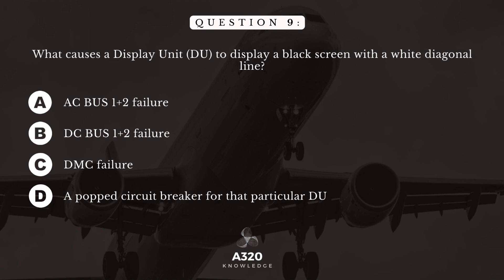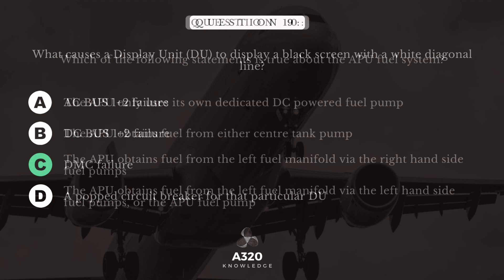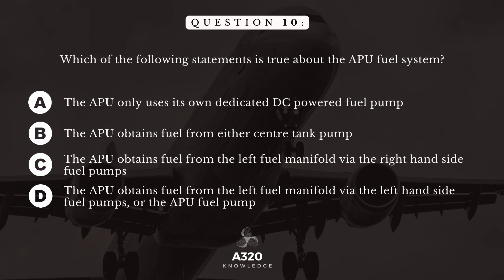Question 9. What causes a display unit to display a black screen with a white diagonal line? The answer is: a DMC failure. Question 10. Which of the following statements is true about the APU fuel system? The answer is: the APU obtains fuel from the left fuel manifold via the left-hand side fuel pumps, or the APU fuel pump.